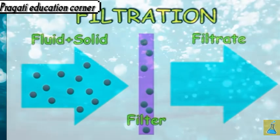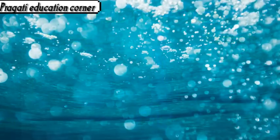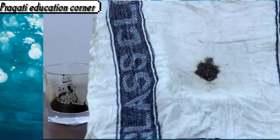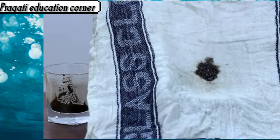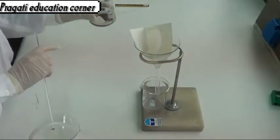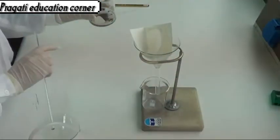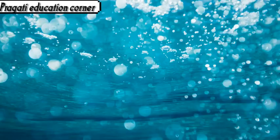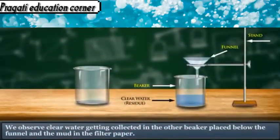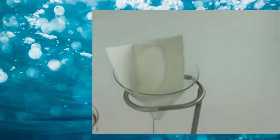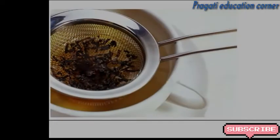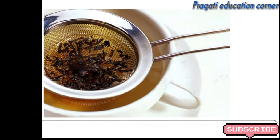For separating insoluble solid components from a liquid, the mixture is allowed to pass through a filter. This process is known as filtration. To filter something, a filter may be a perforated filter paper, a cotton layer, a cloth layer, a layer of sand, or anything similar.